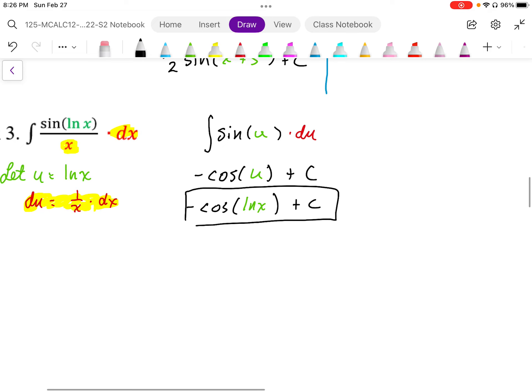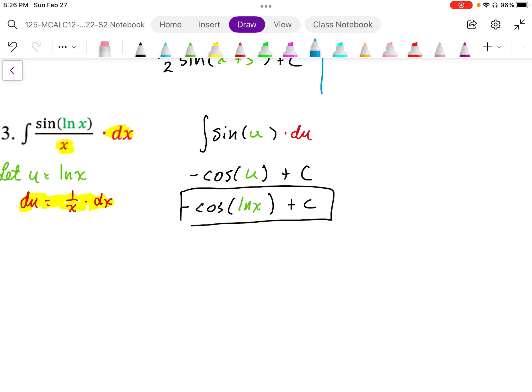So again, we're going to check this by differentiating. So I'm going to differentiate d/dx of negative cosine ln x plus c. When I differentiate this, the derivative of negative cosine ln x is going to be positive sine of ln x.